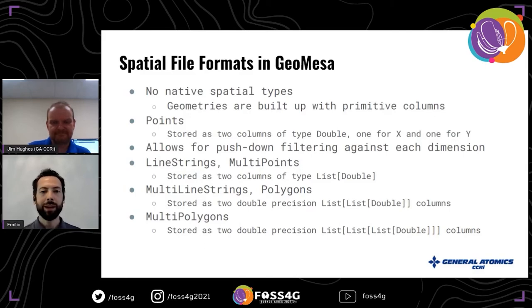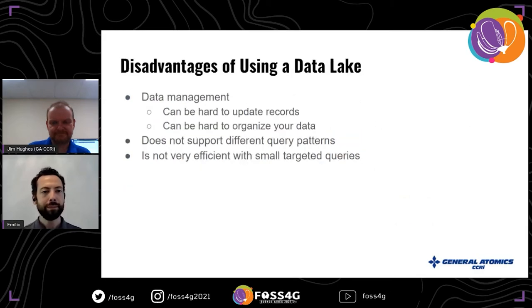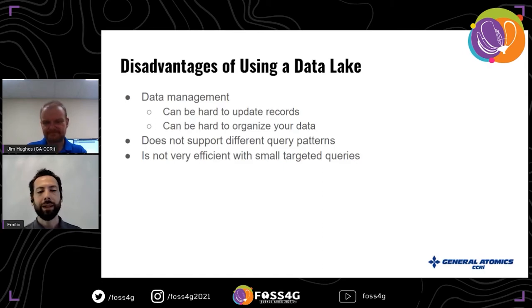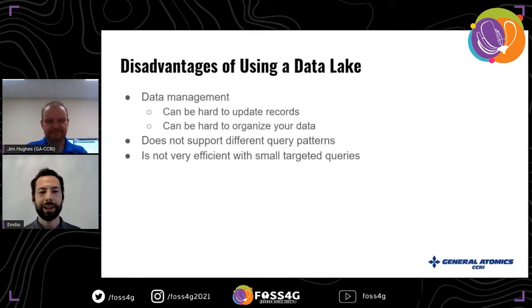The disadvantages of using a data lake: data management can be hard — updating records is difficult because the record you're looking for is in a Parquet file somewhere on disk and you don't know exactly where. It's hard to organize data floating around in S3. It doesn't support different query patterns — there's no secondary index, so if you want to look up a record by ID you might end up reading through your entire dataset. It's also not efficient for small targeted queries because the filtering is fairly coarse and you have to do a decent amount of processing to retrieve small records.